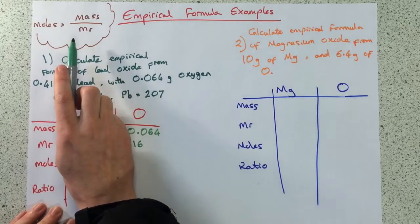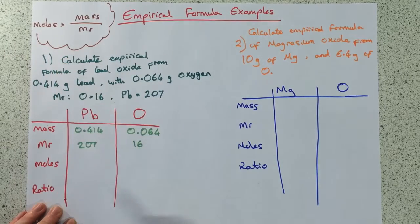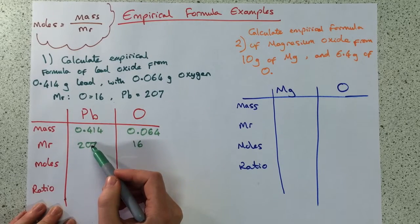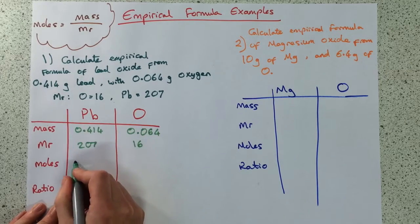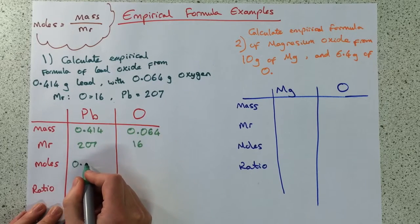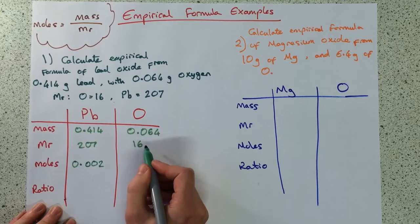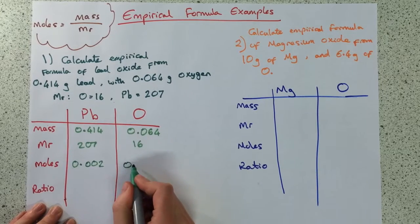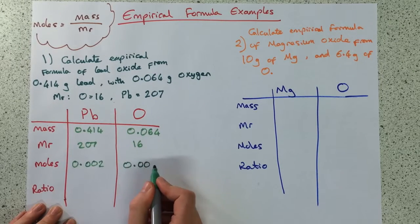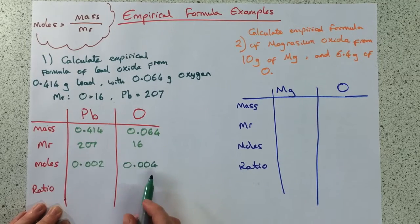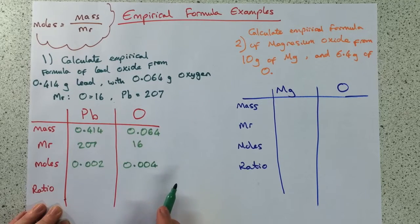Moles — you're using this equation here: moles is mass divided by MR. So that divided by that gives 0.002 for lead, and this divided by this gives 0.004 for oxygen. You can see the ratio is one of those to two of those. If you're not sure, divide by the smallest number.